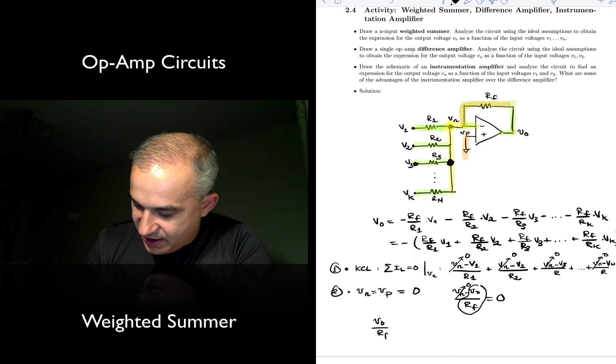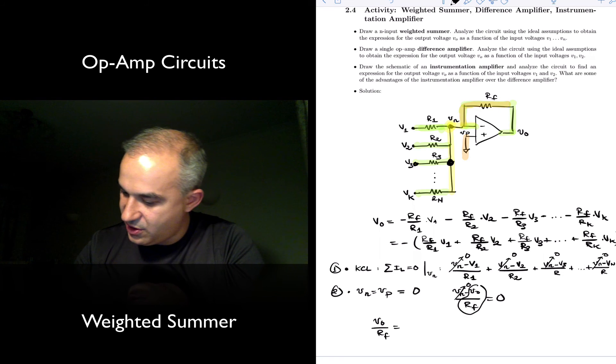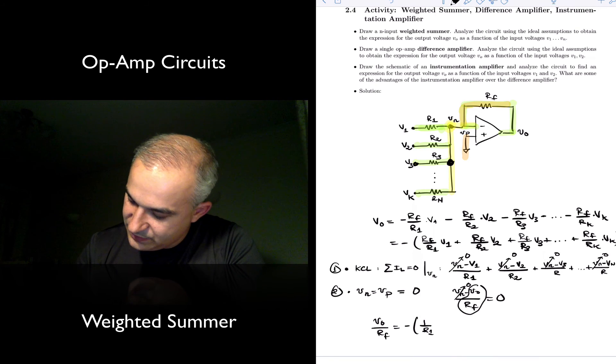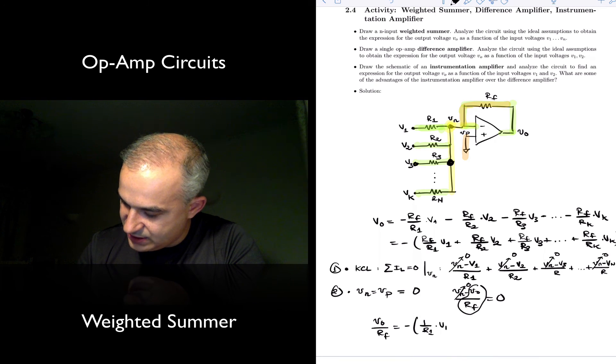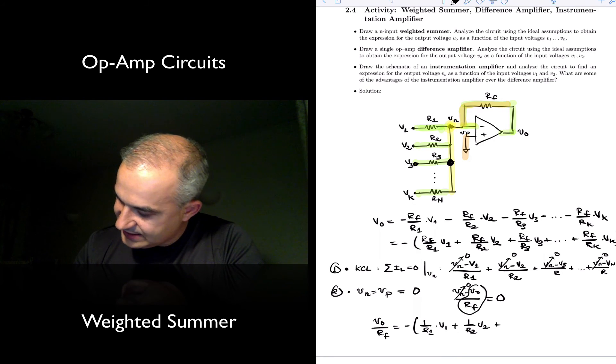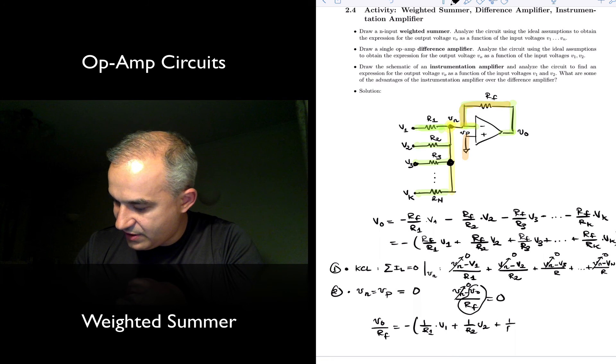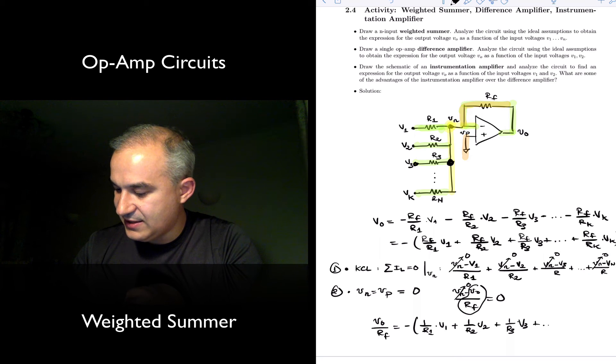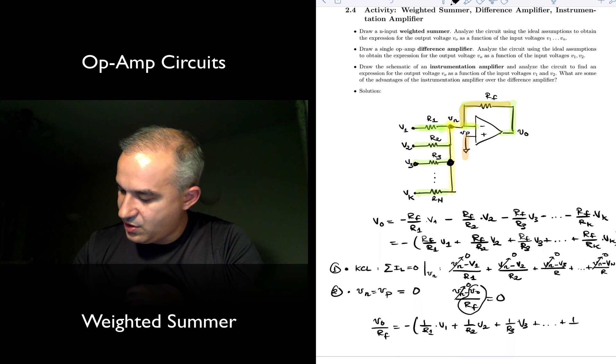The other expression that you have there that is minus 1 over R1 times V1 plus 1 over R2 times V2 plus 1 over R3 times V3 plus dot dot dot 1 over Rk times Vk.